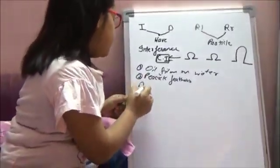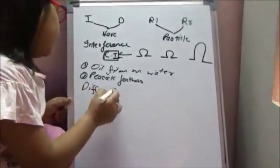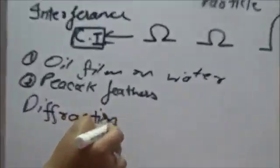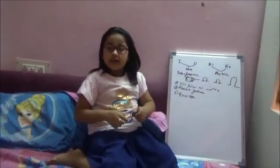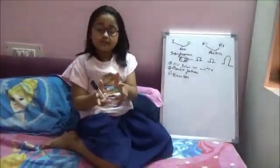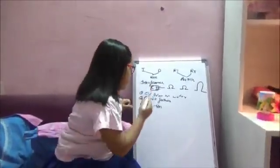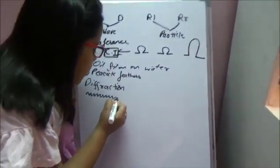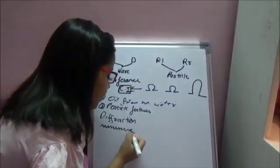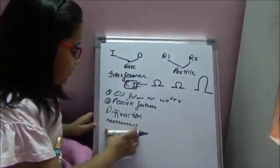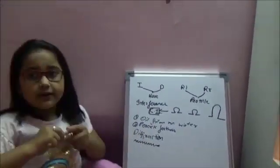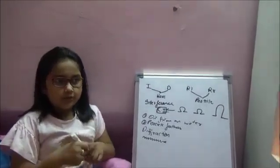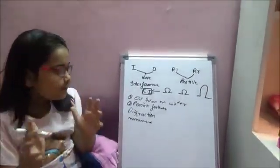Coming to the next phenomenon — diffraction. Diffraction is when a small opaque object blocks the path of light. Then the light no longer travels in a straight line; it bends around the corners of the object. However, we don't encounter diffraction in our day-to-day life because there is a condition that must be fulfilled.